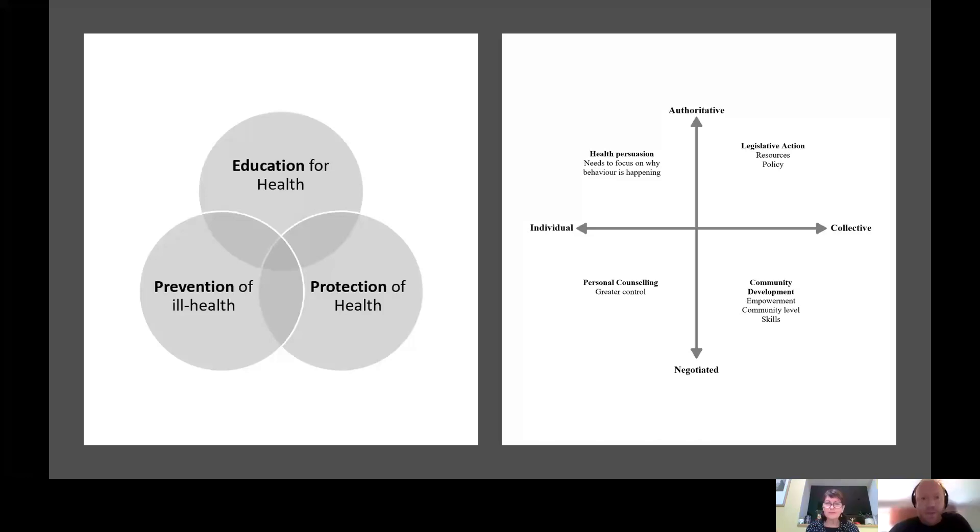You should be able to see on the left of your screen a Venn diagram which is known as Tannehill's model broadly speaking and on the right hand side of the screen that's Beattie's model. James will talk about Tannehill first, not going into mass detail but highlighting what's in helpful textbooks and tutorials.